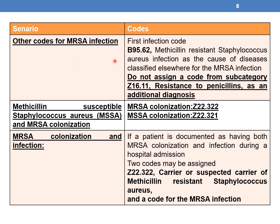Guideline 2 — Other codes for MRSA infection: When there is no combination code and the infection is due to MRSA, you need to assign two codes: first, the infection code, and then B95.62 (Methicillin-resistant Staphylococcus aureus infection as a cause of disease classified elsewhere). Do not assign Z16.11 (resistance to penicillin), as the name 'methicillin-resistant' already indicates this.